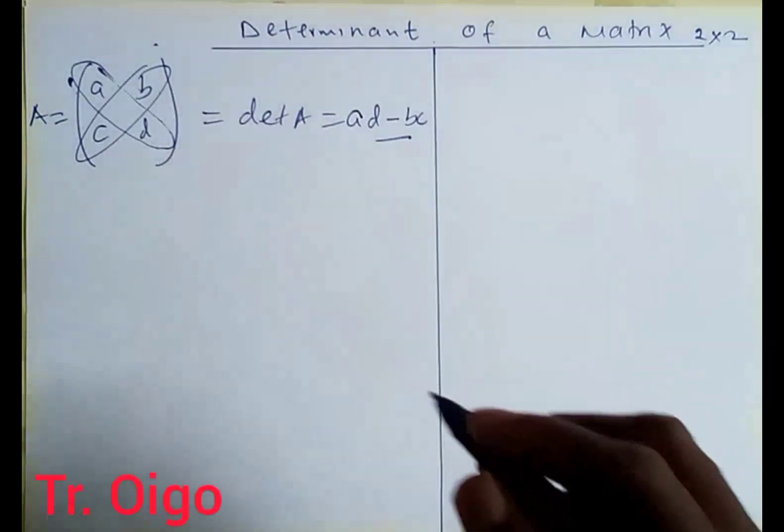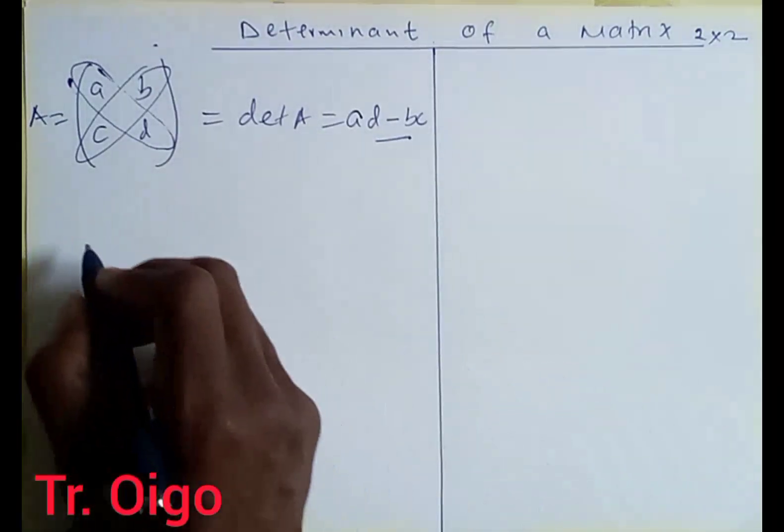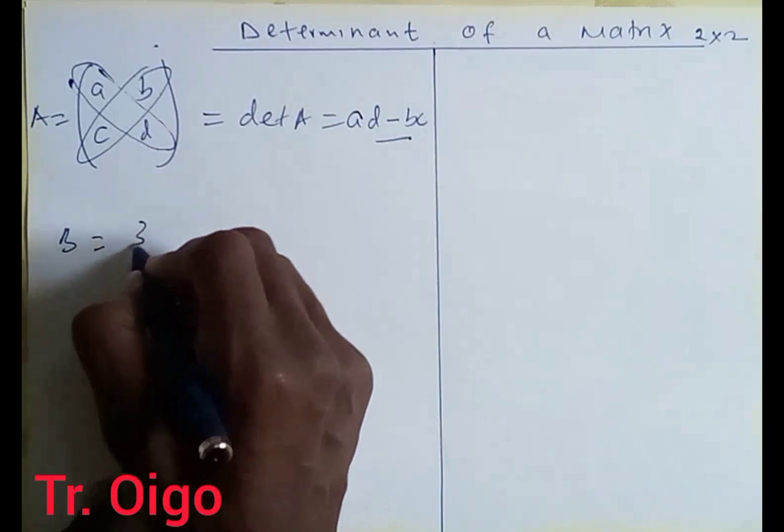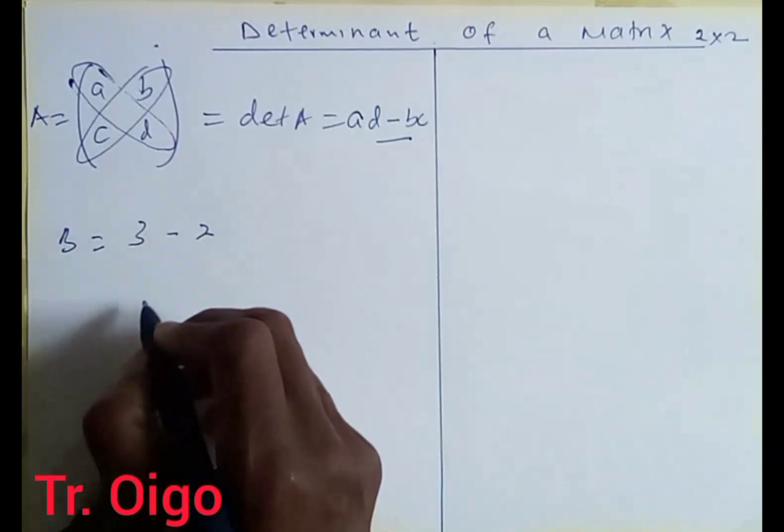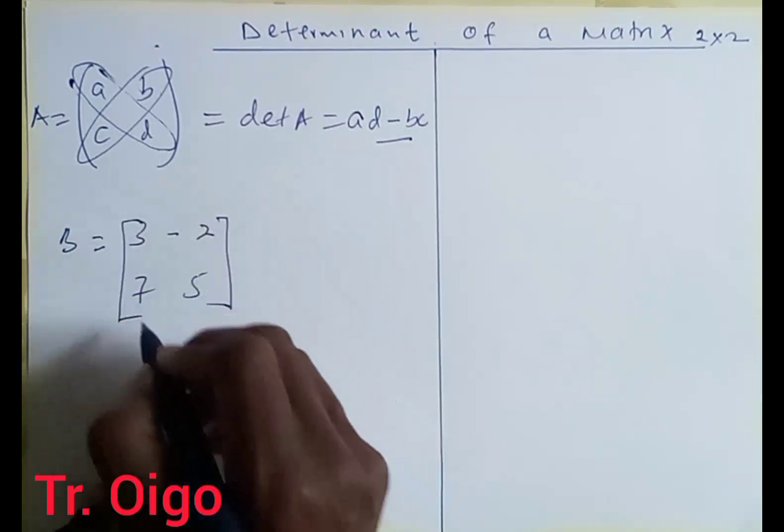For example, if I was to take a matrix of this particular format, that is a matrix B that is given by 3, negative 2, and then 7, 5. We have this matrix.